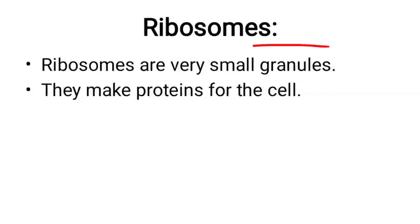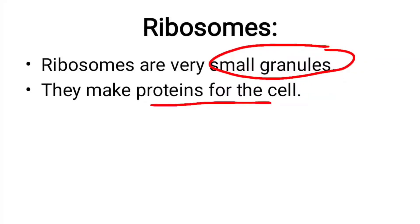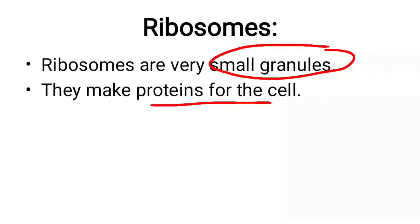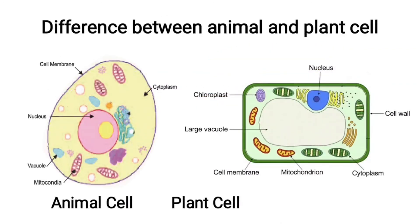Ribosomes are small granule-like structures found in all cells. Their function is to make protein for the cell. In MCQs, ribosomes are called the protein factory. They are found free in the cytoplasm as small dots and are also attached to the surface of the endoplasmic reticulum.